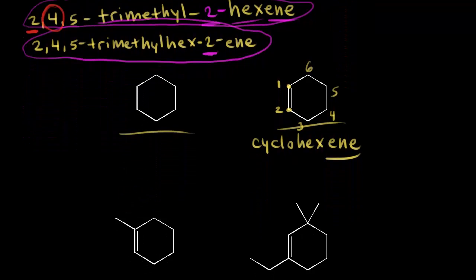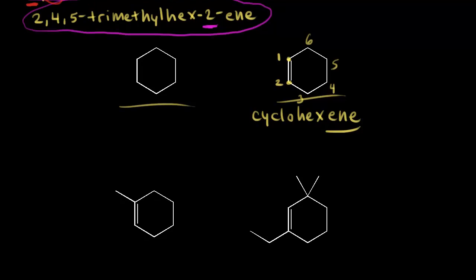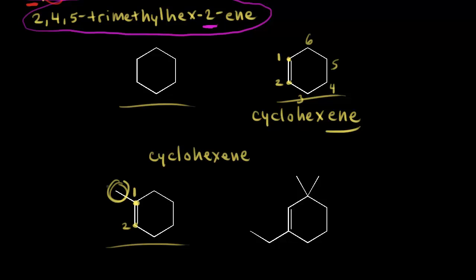What if you have substituents? To give our substituent the lowest number possible, we look at where the double bond is and choose which end is carbon one. To give this methyl group the lowest number, we make the top carbon carbon one. That's carbon one, carbon two, and so on around the ring. This is a cyclohexene ring, and we have a methyl group coming off carbon one, so we'd call this 1-methylcyclohexene.